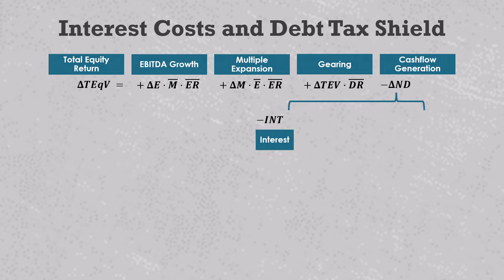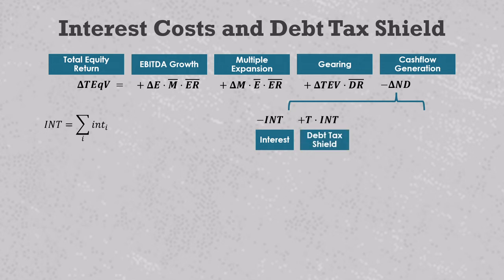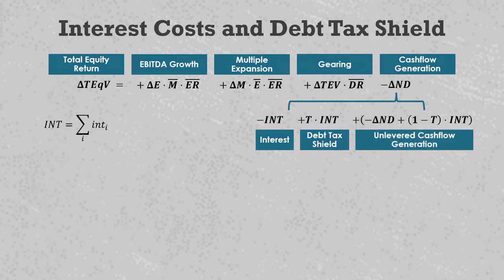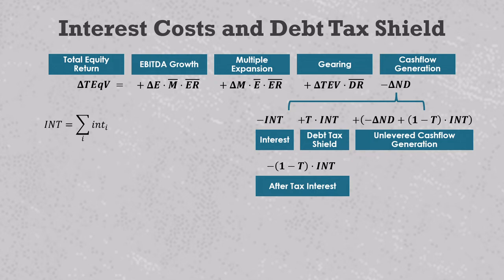We'll start by assuming that we actually know the total amounts of interest paid. Here, the capital INT represents the total interest payments and the large sigma term tells us that it's the cumulative sum of all the interest payments over the holding period. We must also account for the fact that interest reduces a company's tax burden. So we create a positive value driver to represent the debt tax shield, which is equal to the product of the interest cost and the corporate tax rate. And then to make sure that everything balances, the hypothetical unlevered cash flow generation term must be the actual cash flow generation plus the interest payments minus the debt tax shield.